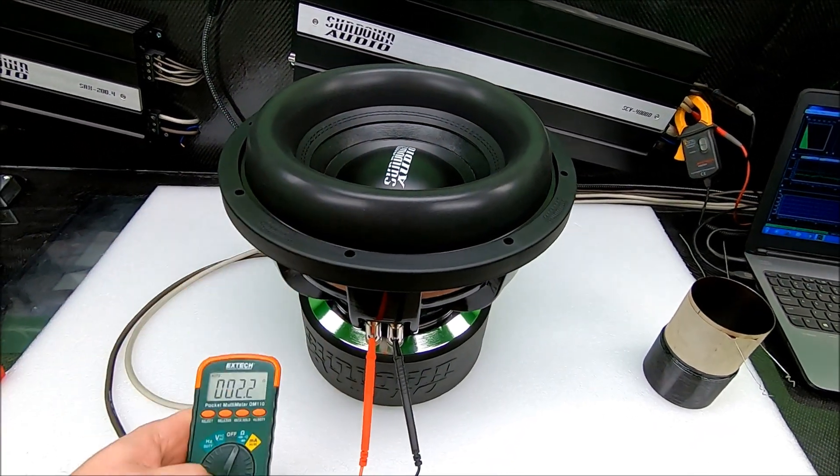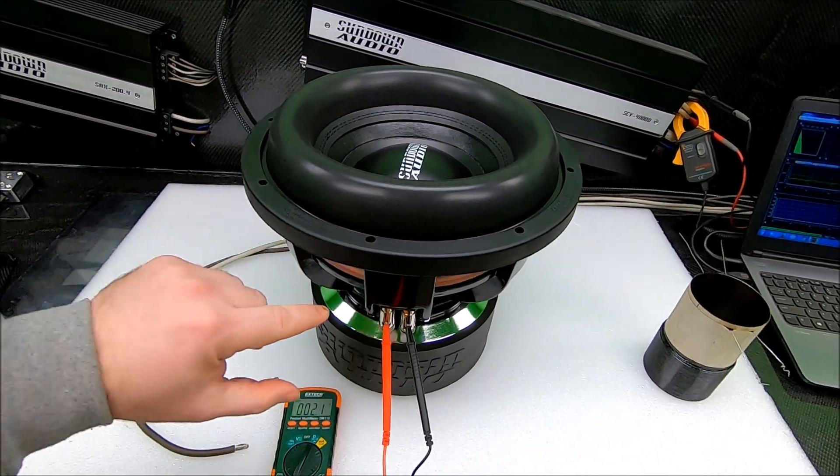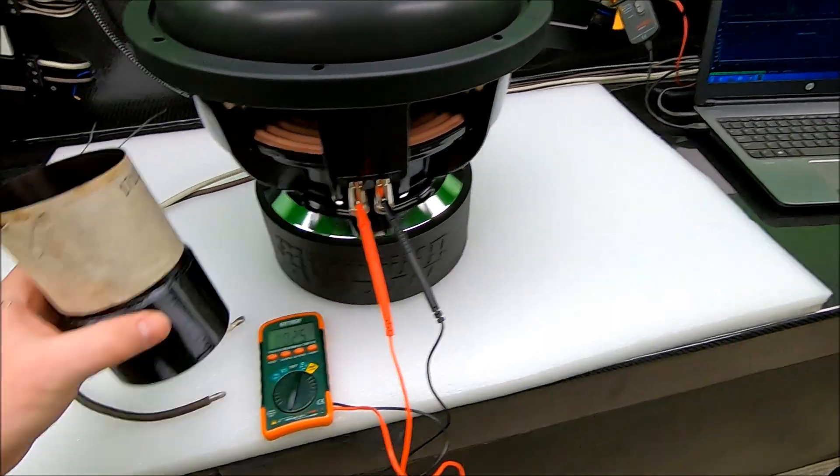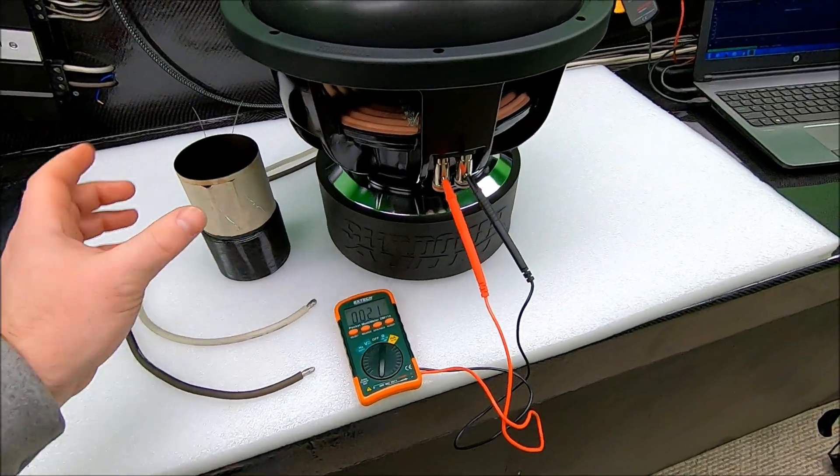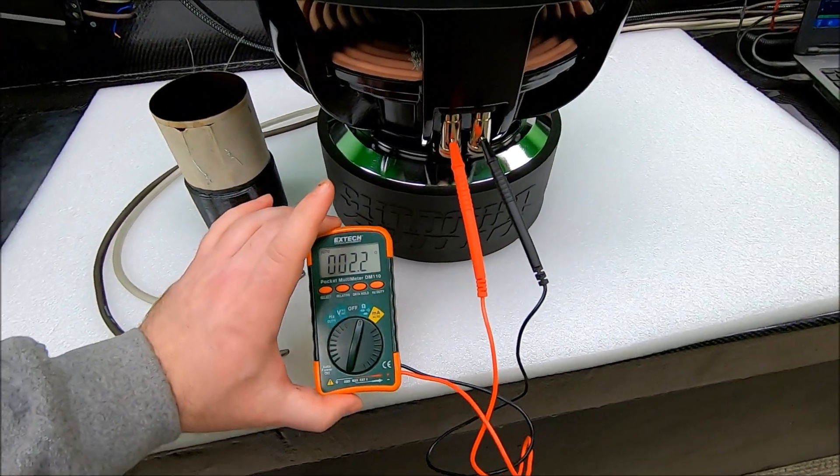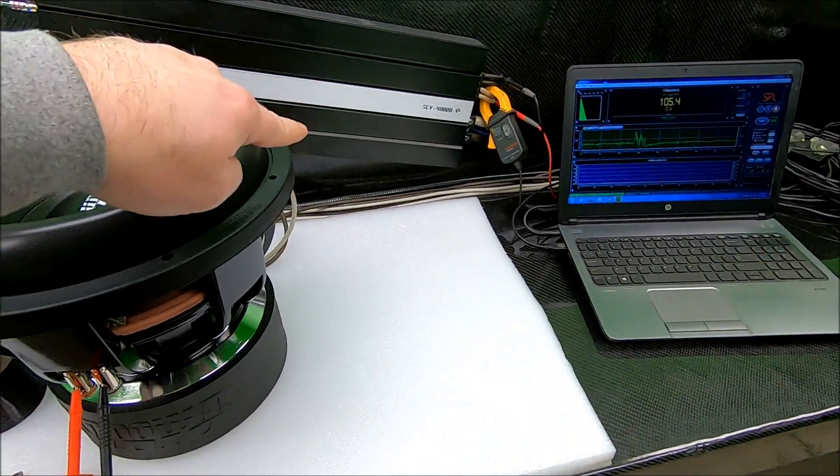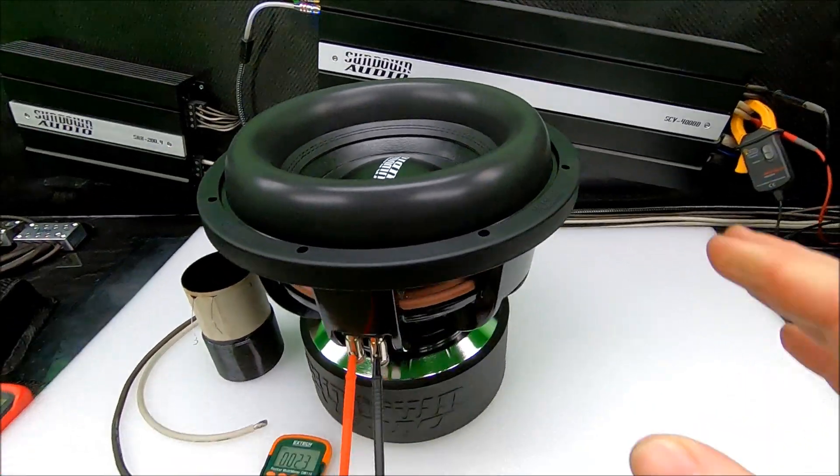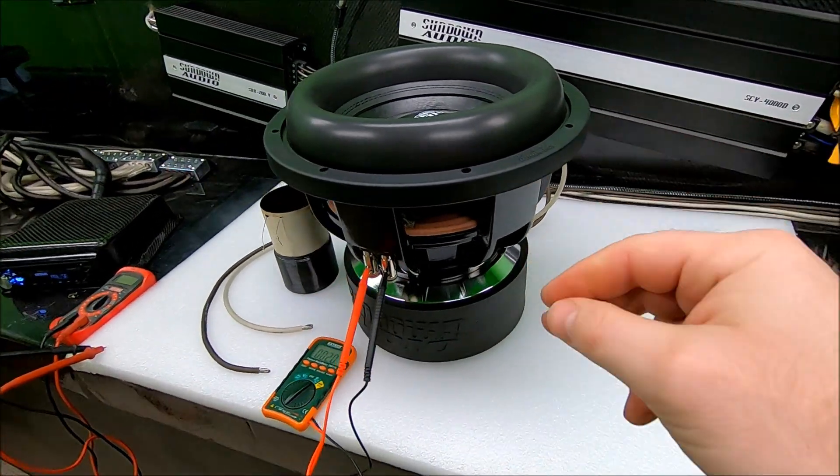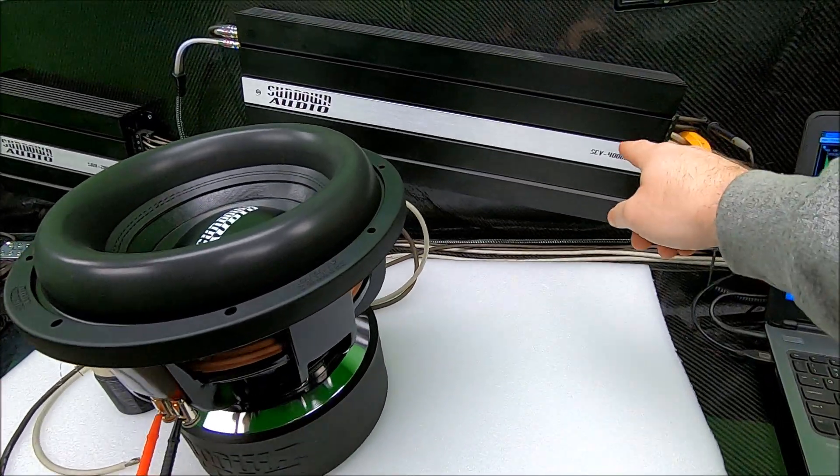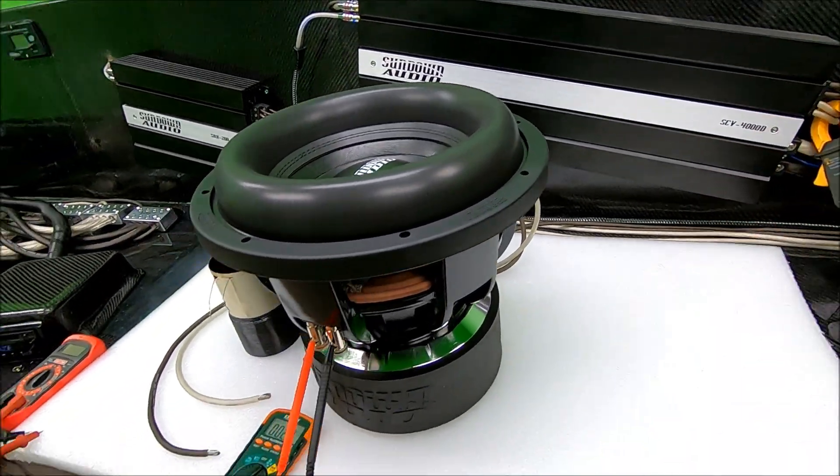Because that subwoofer has a reactance, a reactive load. So as that voice coil is in there, and it moves in that gap, it moves in that magnetic field, it actually changes the resistance that your amplifier sees. So you can take a dual 2 ohm sub, as we're going to test this one in just a second, you can wire it in parallel to 1 ohm, hook it up to your amplifier, it does not stay at 1 ohm.